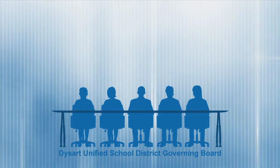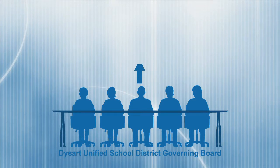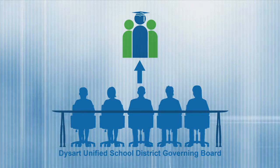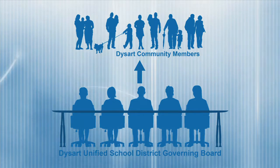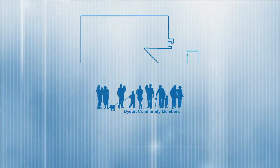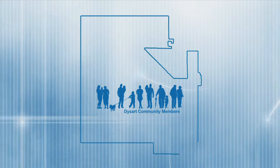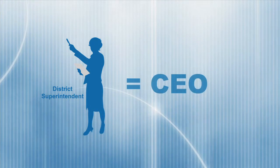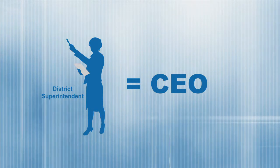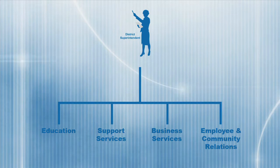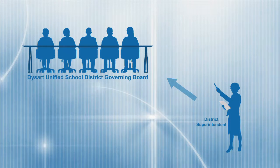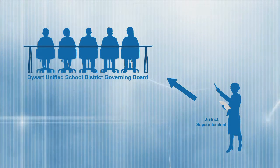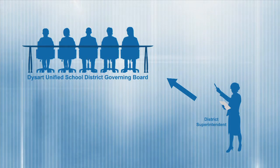Previously, it was often thought that the governing board's role was to serve the organization, or the Dysart Unified School District. However, in policy governance, the governing board's role becomes more focused on serving the community — more specifically, anyone who lives within the boundaries of the Dysart District. The superintendent's role within policy governance becomes equivalent to that of a chief executive officer or CEO. He or she is the person who has direct authority over the operational aspects of the district, but is also the sole person accountable to the governing board and ultimately responsible for the Dysart District meeting its expectations.